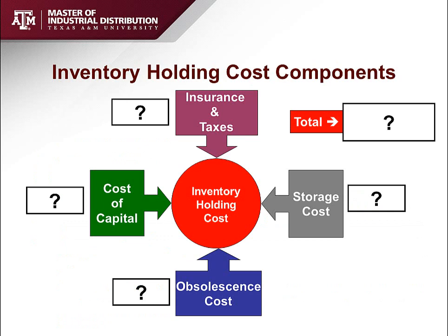Inventory holding cost has four components. Cost of capital is the largest one, estimated to be between 20 and 40 percent. You might be charged two to five percent per year for inventory from headquarters, but when we talk about cost of capital we are thinking about the opportunity cost as well — what your expected return on investment would be if you had invested in the stock market or opened a new branch instead.